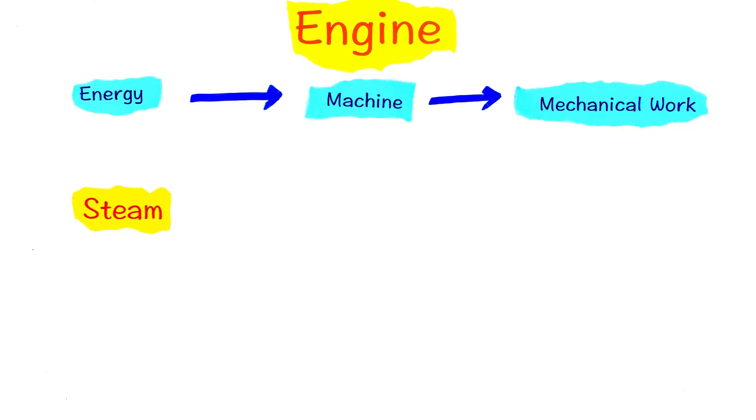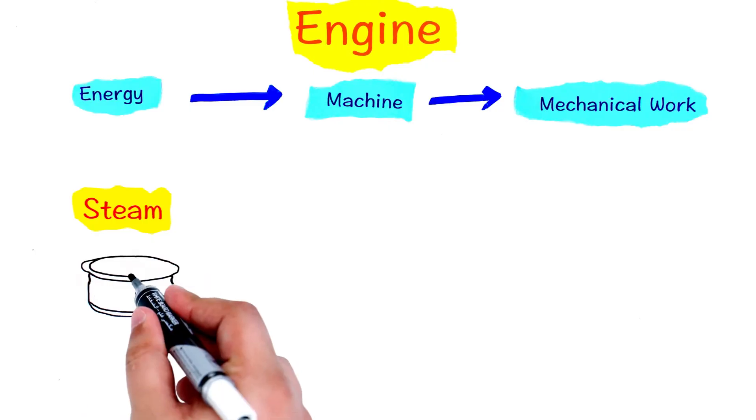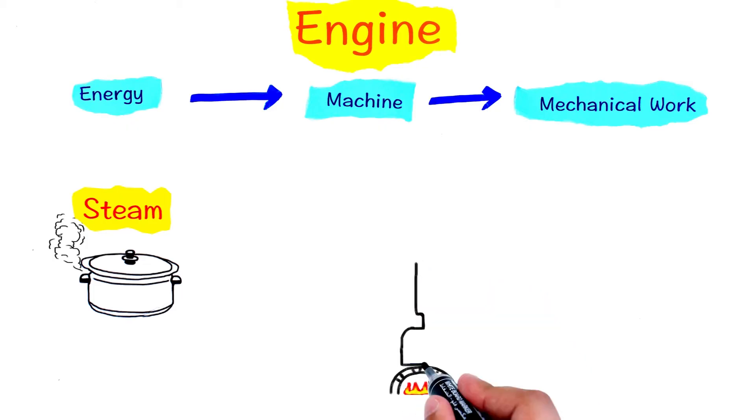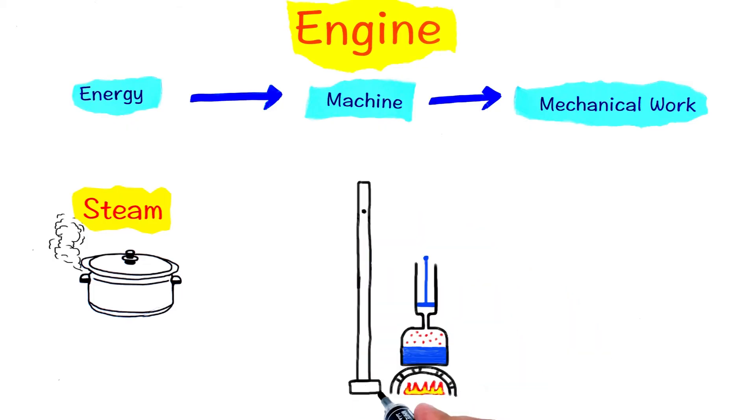If you ever try to cook, you will notice that if water is boiled in a cooker, the resulting steam will start to push the cover of the cooker. That means steam coming from boiled water actually has energy and can exert some pressure. So some bright minds thought maybe we can use this steam as an energy source, so they designed engines based on this idea to use steam to do different mechanical work.